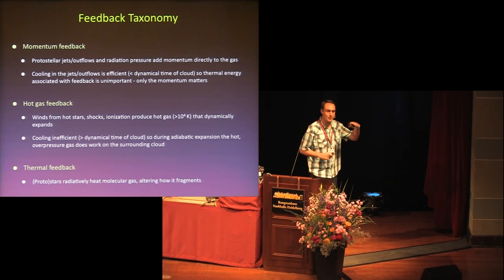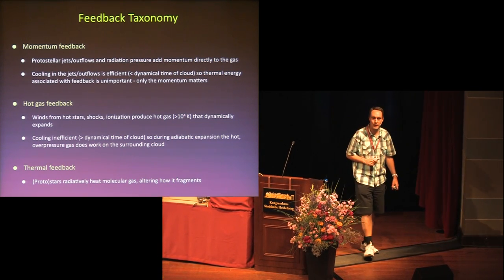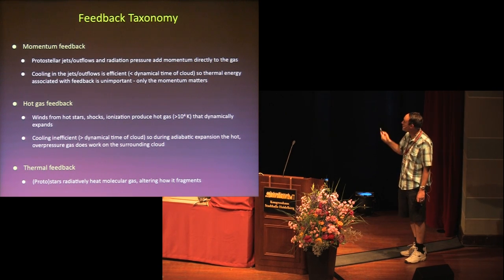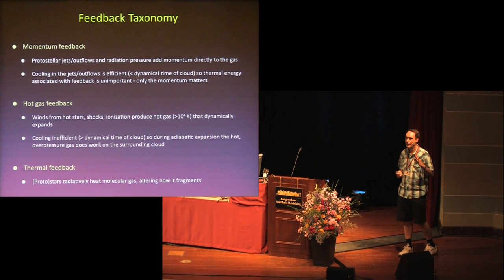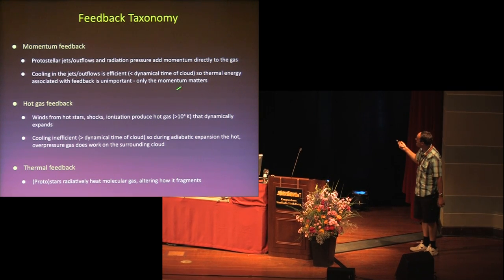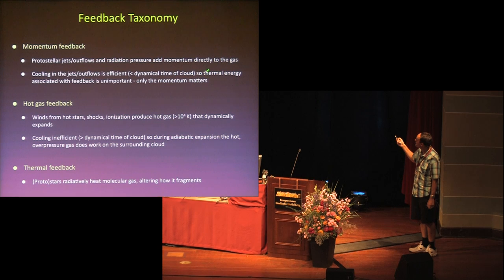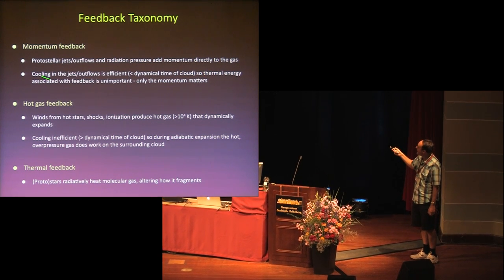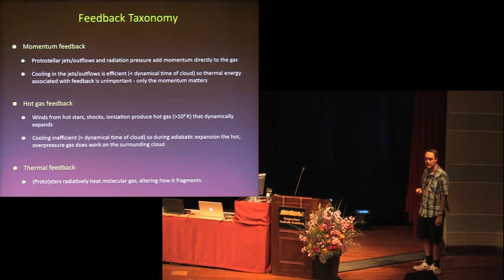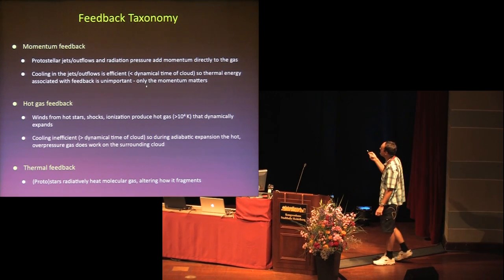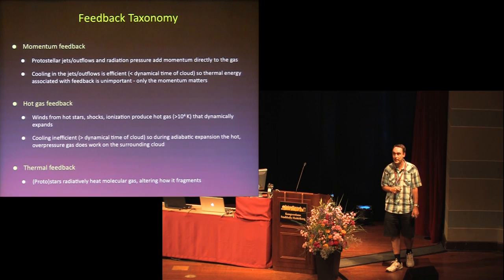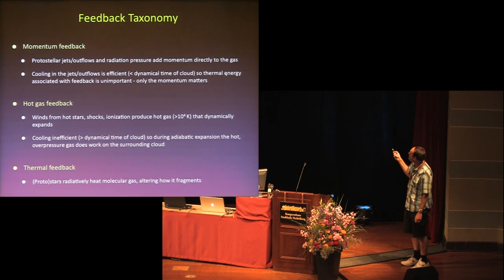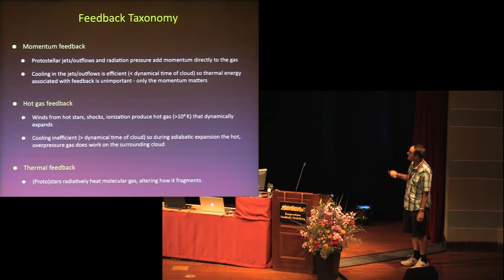This is a talk about feedback, and I'm going to cover three main categories. The first is momentum feedback, which includes protostellar jets and outflows and radiation pressure — these add momentum directly to the gas. The key here is that cooling in jets and outflows is very efficient, happening in less than the dynamical timescale of the cloud, so the thermal energy is radiated away and it's the momentum that matters.